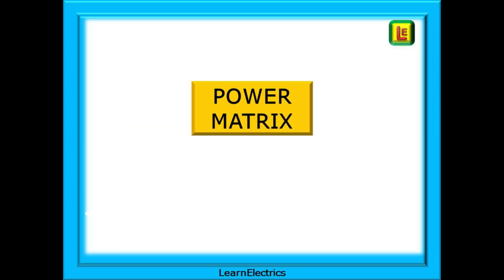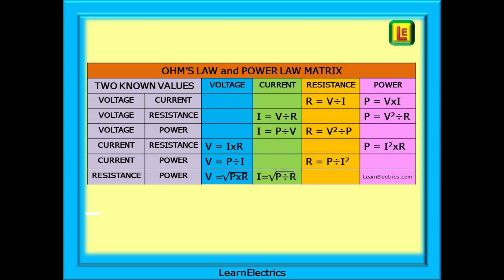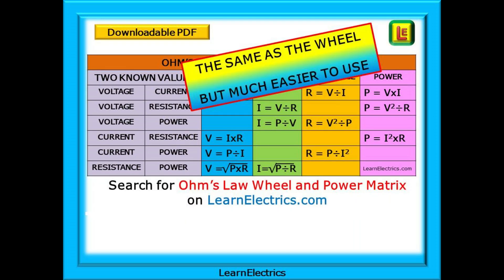Let's look now at the power matrix, as I call it, and I actually find this easier to use than the wheel. I created this table or matrix to help me find answers more quickly than the Ohm's Law wheel. Clearly shown on the left-hand side are the various combinations of two values from four. Basically, if you know any two values, then you can find any of the other two instantly. It's the same as the wheel, but much easier. And, we will put a copy of the wheel and this matrix onto the website at learnelectrics.com.